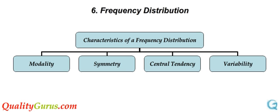Some features which characterize a frequency distribution are: modality, symmetry, central tendency, and variability. We will look at each of these in the next few slides.